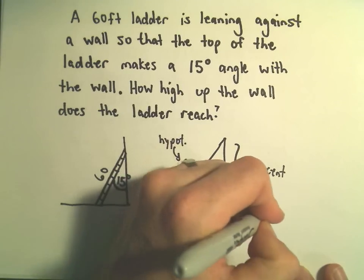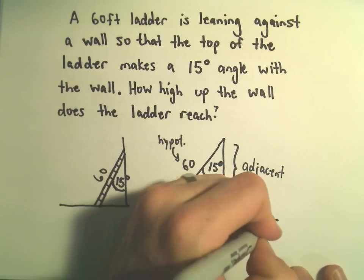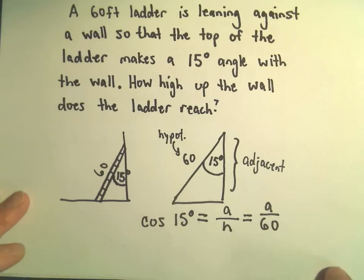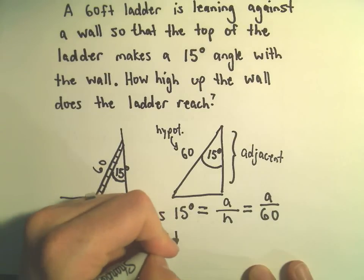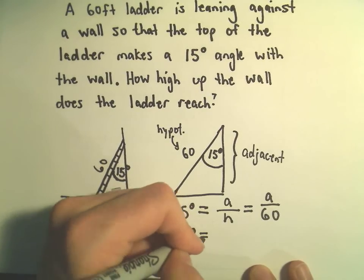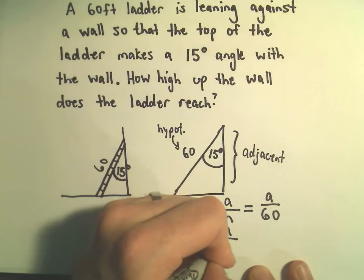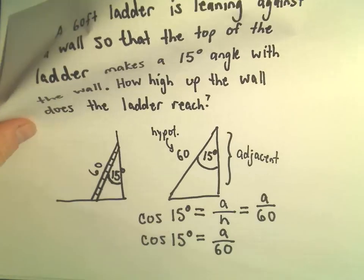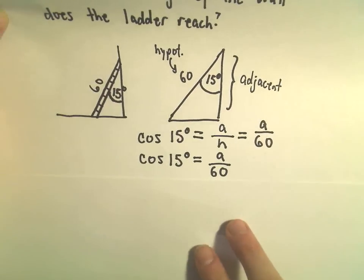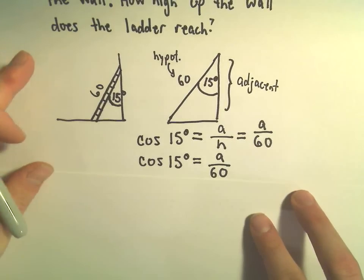We know the hypotenuse here has length 60, so we get our equation here. It says that cosine of 15 degrees is going to equal A over 60. So really all we have to do in this case is just multiply both sides by 60, and that'll give us the length of our adjacent side.